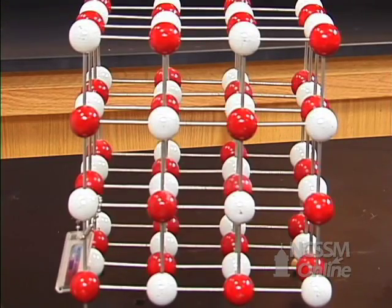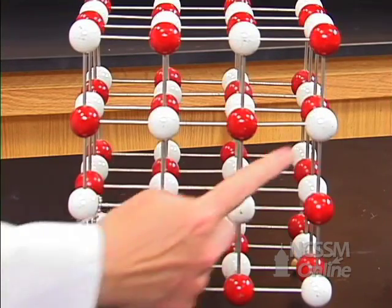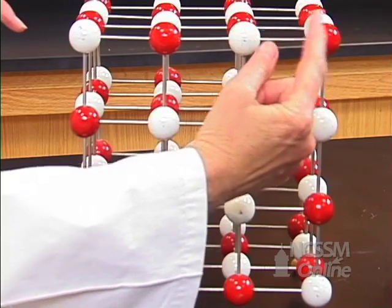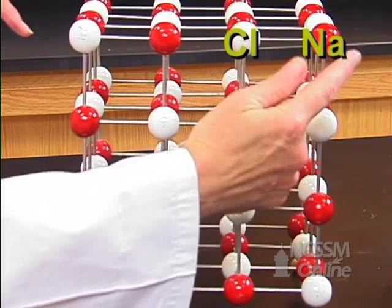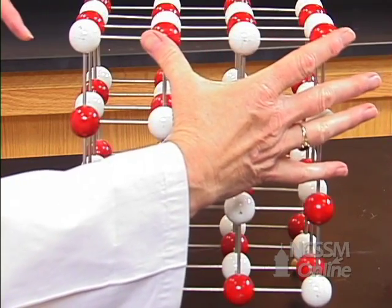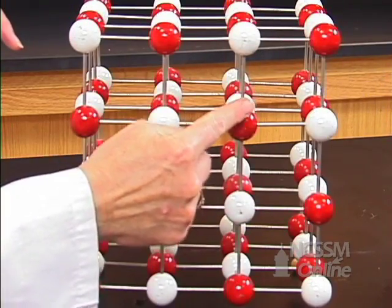Ionic solids have a definite crystalline structure. In this model you see sodium and chlorine atoms, and they're attached to opposite types of atoms.